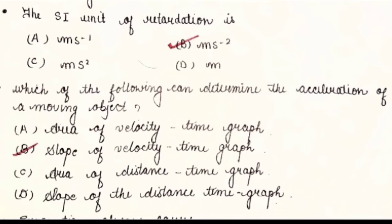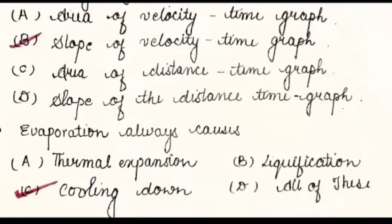Next, which of the following can determine the acceleration of a moving object? A) area of velocity-time graph, B) slope of velocity-time graph, C) area of distance-time graph, D) slope of the distance-time graph. And the answer is slope of velocity-time graph.